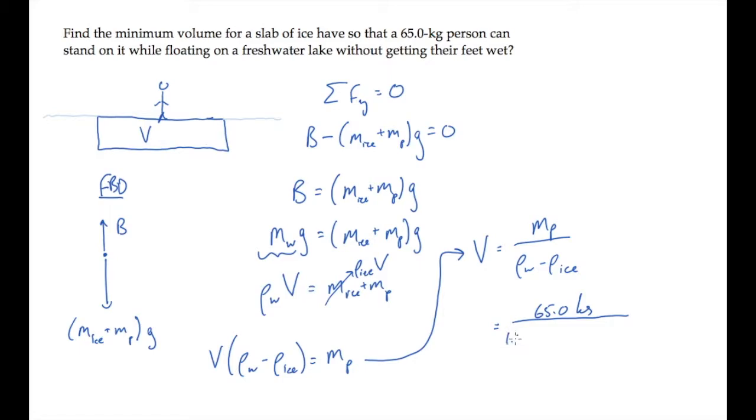The density of fresh water is 1 times 10 to the third kilograms per cubic meter, and the density of ice is 920 kilograms per cubic meter. When you calculate, you find that the slab's volume is 0.812 cubic meters.